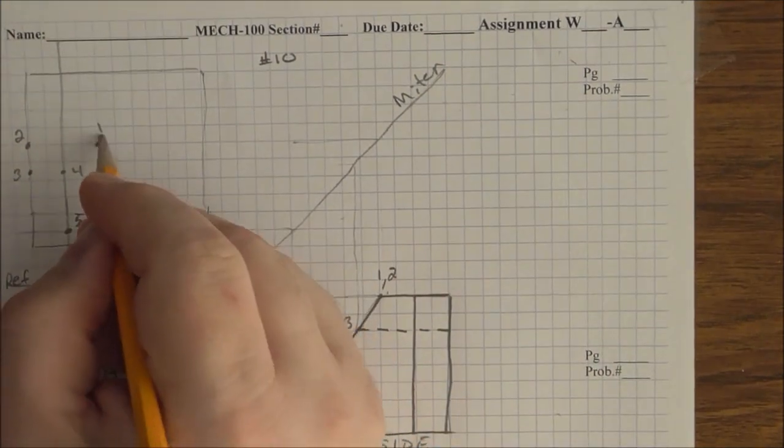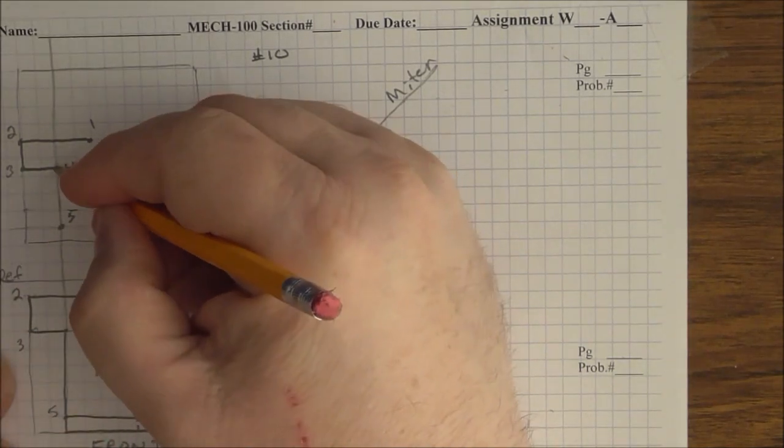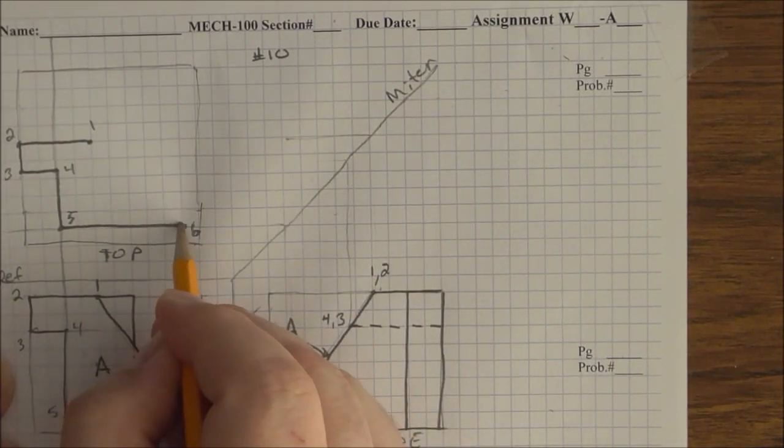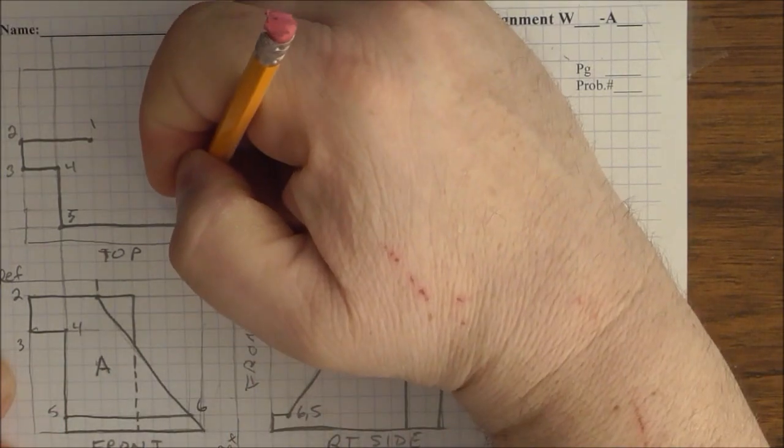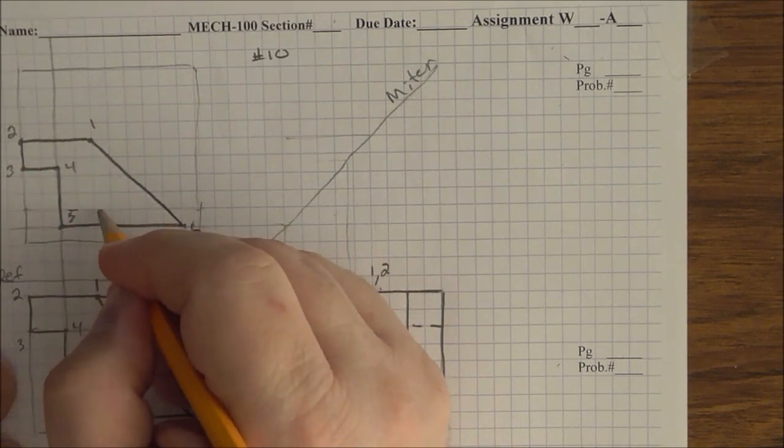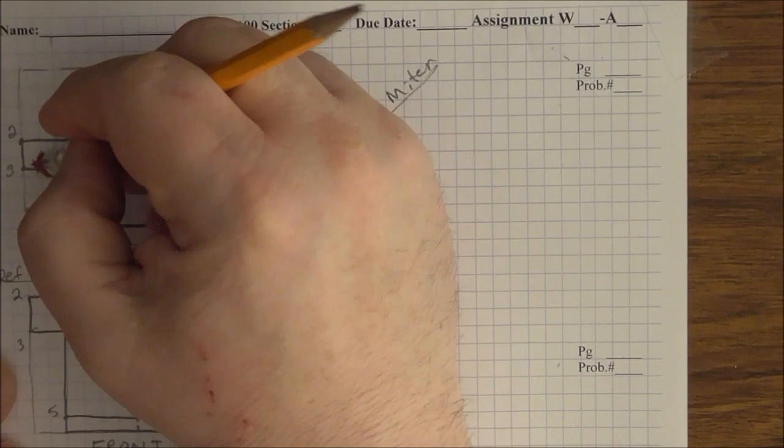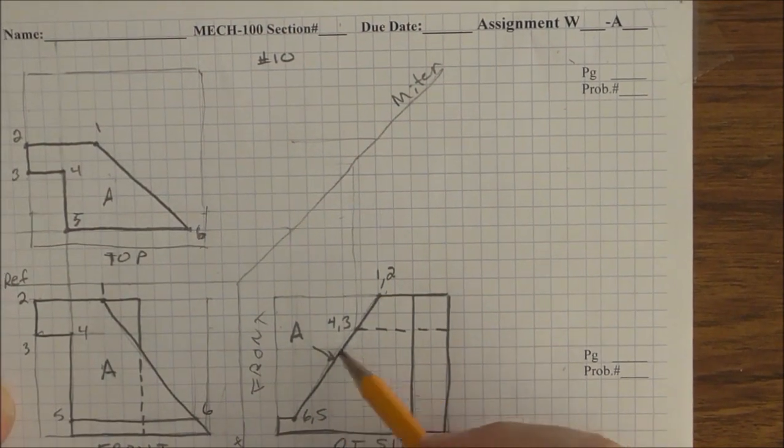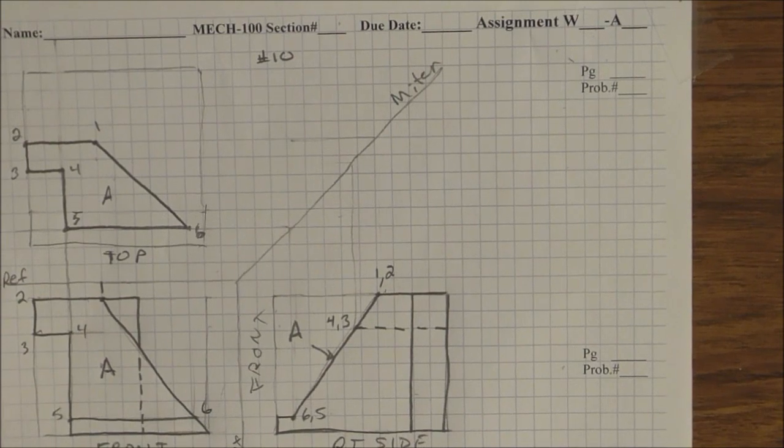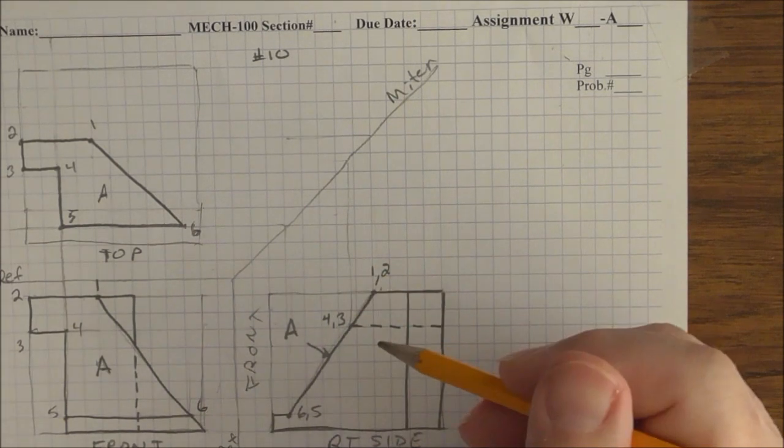Connect the dots. 1 to 2, to 3, to 4, to 5, to 6, and 6 back to 1. Notice we have the same shape. It's more foreshortened because plane A is more vertical than it is horizontal. So it's shorter in this direction. Both of these contours are foreshortened. This one's more foreshortened.